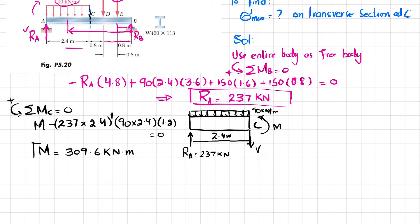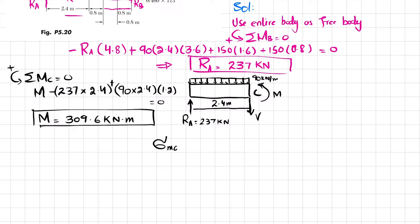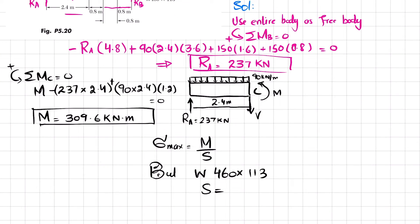Now we have the moment at C. The maximum stress formula is σ_max = M / S, where S is the section modulus. For the W460×113 wide flange beam, we look up the section modulus from Appendix C of the textbook (Mechanics of Materials). The value is S = 2390 × 10⁶ mm³.